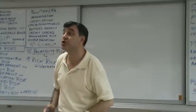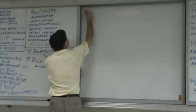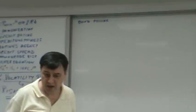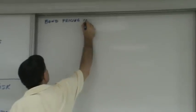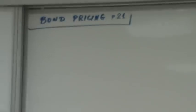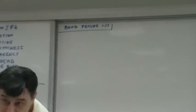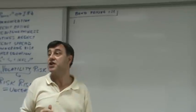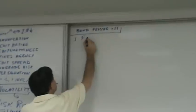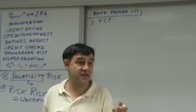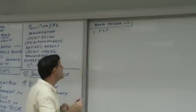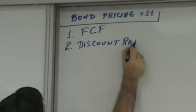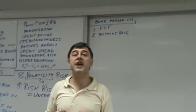Continuing with section 2, bond pricing on page 21. If you're going to be pricing a bond, you need two things: first, you need an estimate of the future cash flows; and second, you need the discount rate.